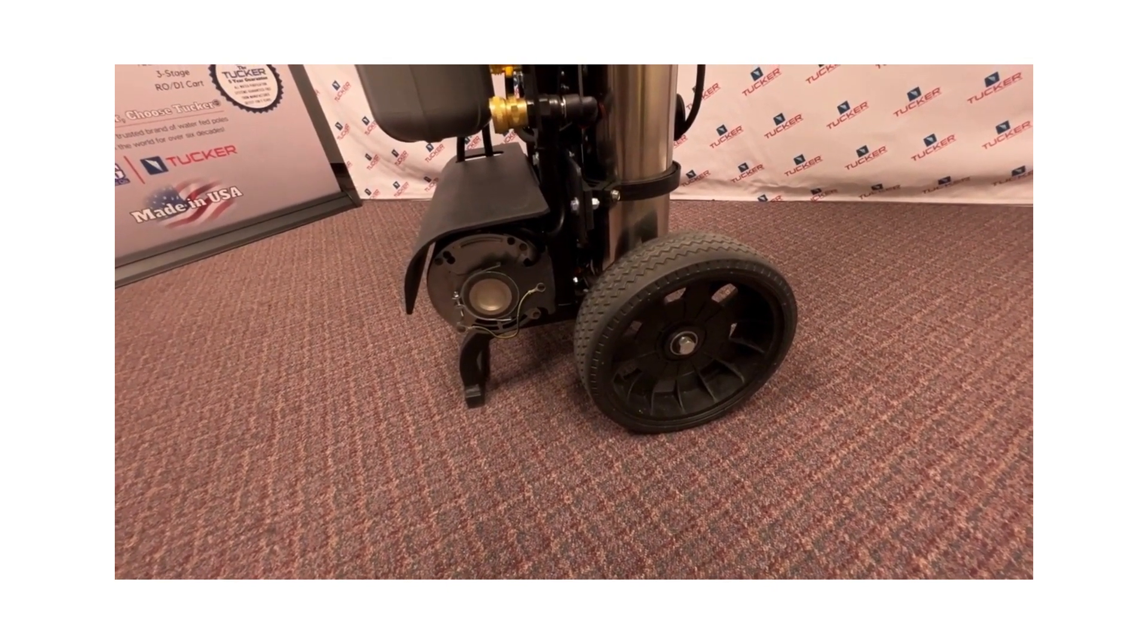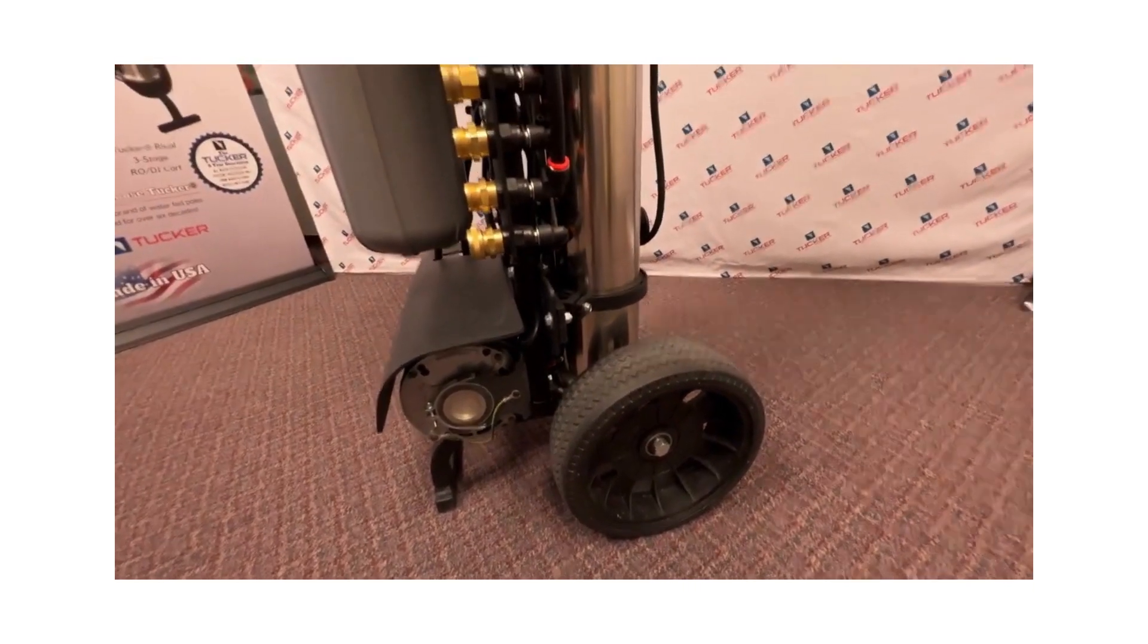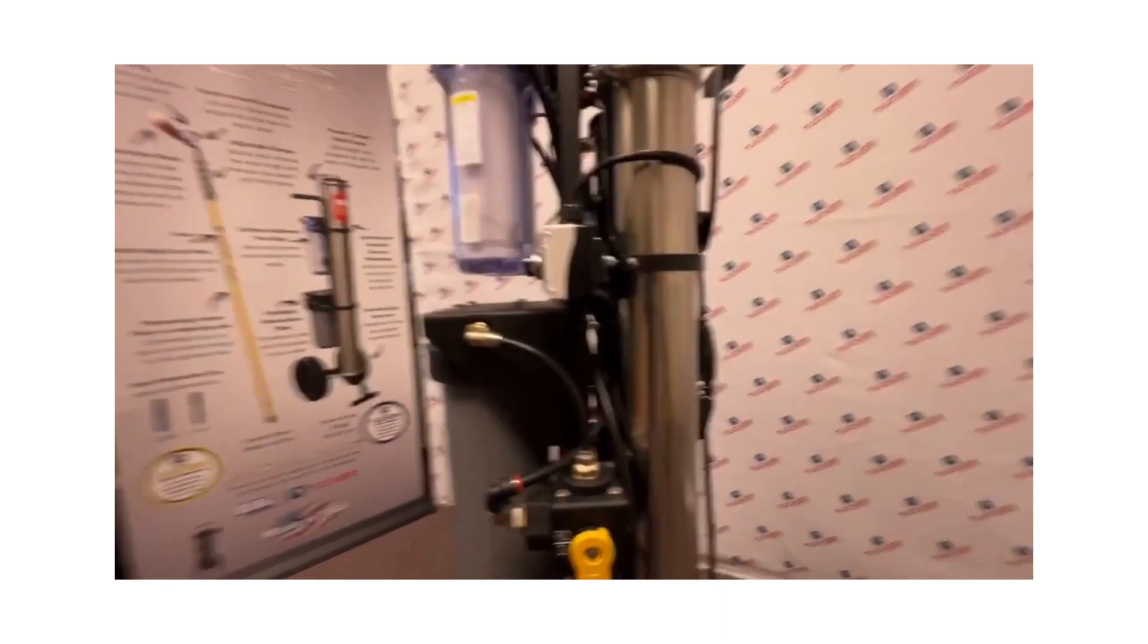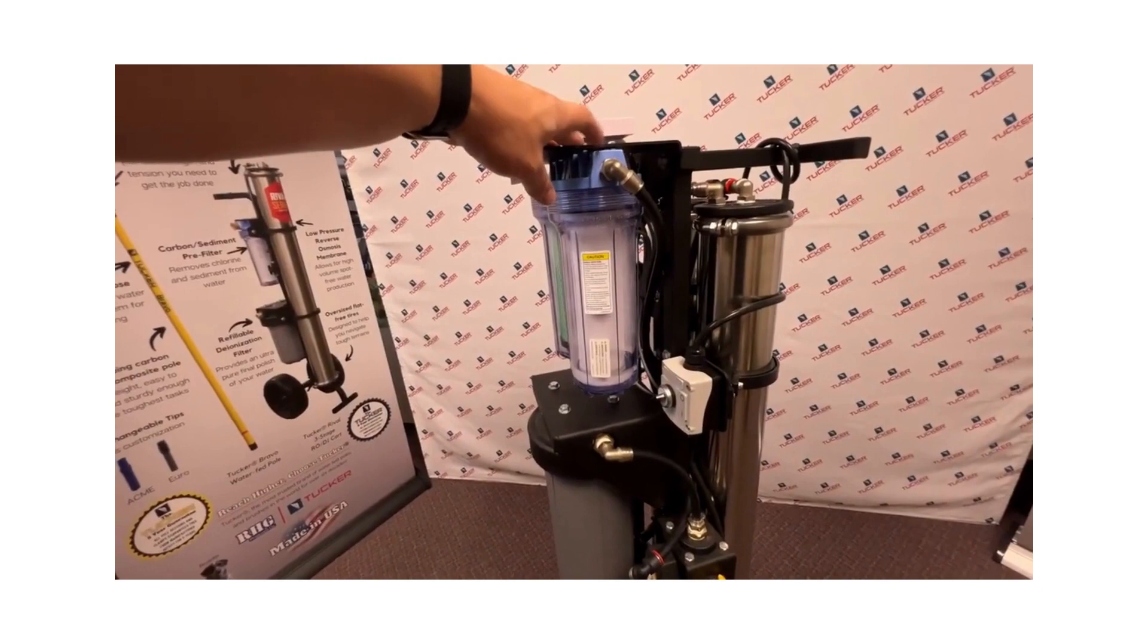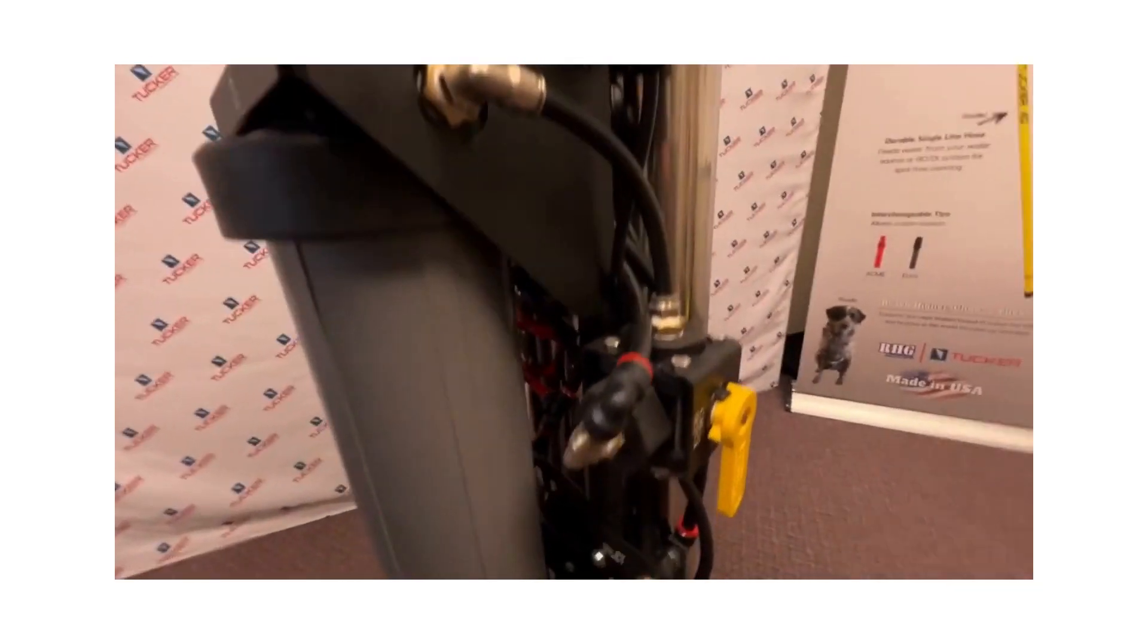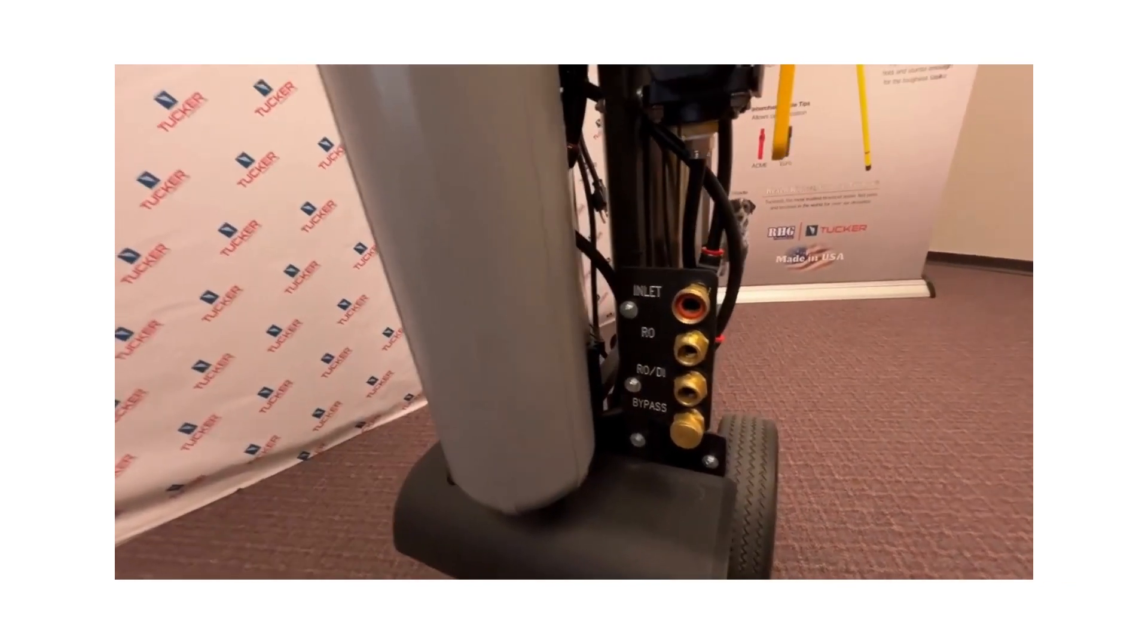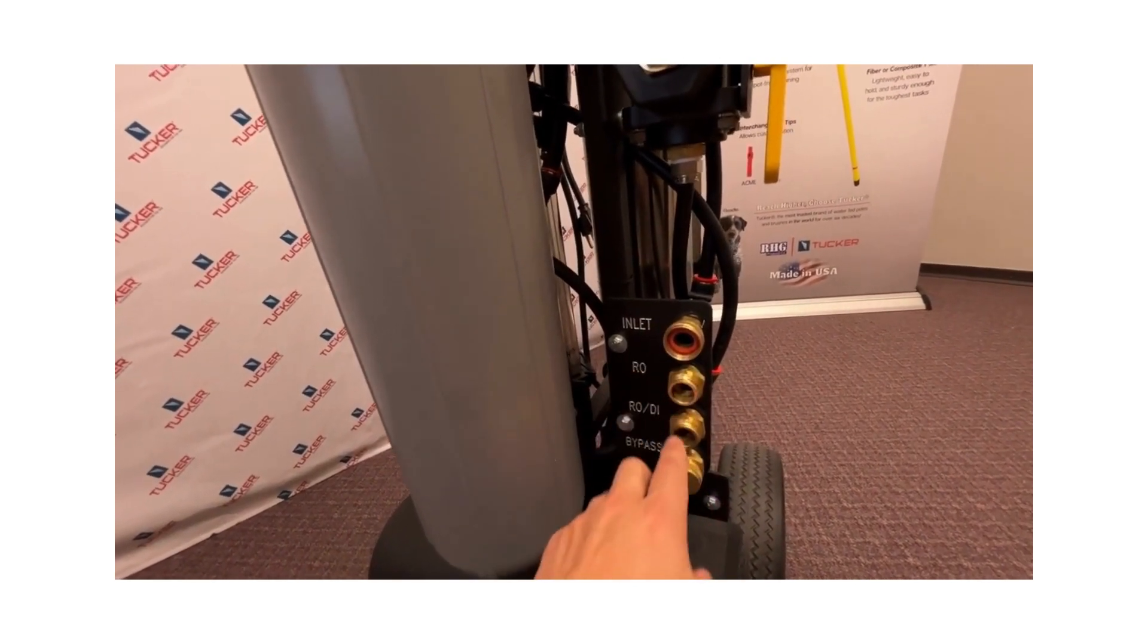Next thing we want to point out in this five-stage system: typically you'll have your water connections hook up straight up to your inlet going into your sediment. Here we want to point out our manifold here where it has your inlet. So this is where you connect your water to, and you'll notice here we have an RO then RO DI.